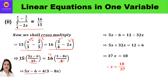Opening the brackets: 5x minus 6 equals 12 minus 32x. Taking like terms together: 5x plus 32x equals 12 plus 6, so 37x equals 18, giving x equals 18/37.